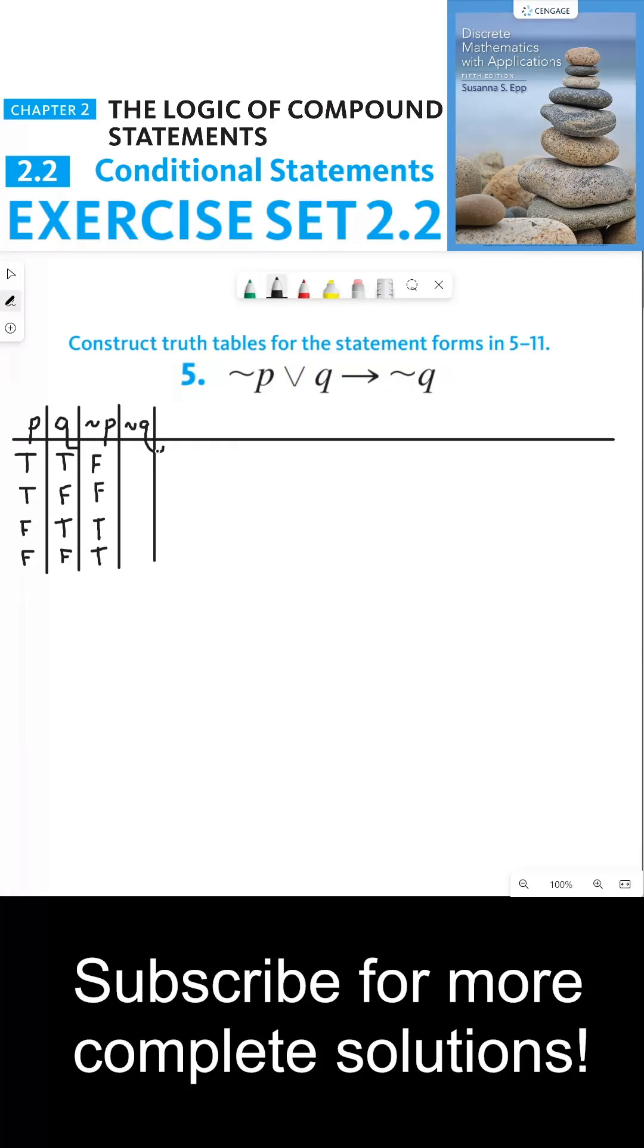First we should do not P, and then we need to identify the truth values for not Q. Then we can identify the truth values for not P or Q. So now we can bring in the conditional.